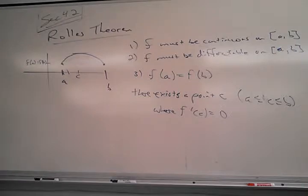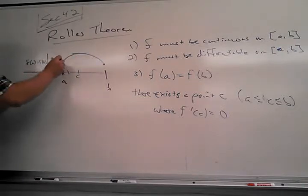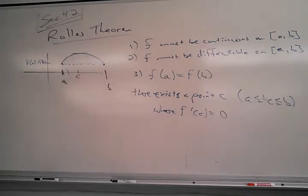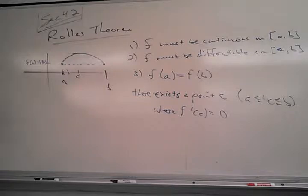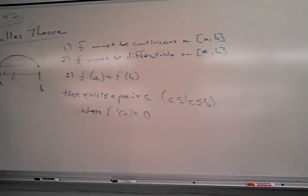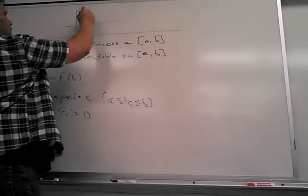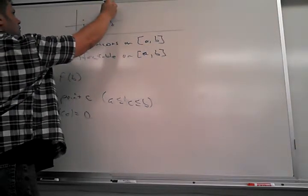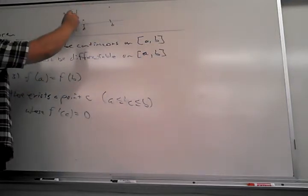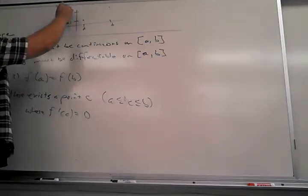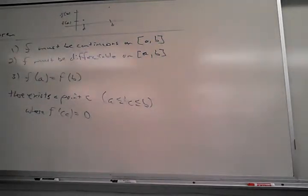The reason I said it was parallel to the straight-across slope is because there's a very simple generalization of this. Rolle's theorem is a specific example of the mean value theorem. The mean value theorem says: what if this was turned on its side? What if I don't have f of A equal f of B? There's definitely a slope here — what is that slope?